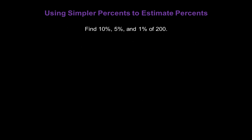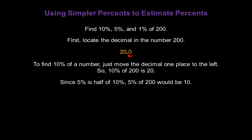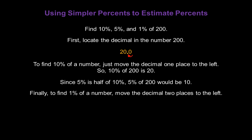Let's find 10%, 5%, and 1% of the number 200. First, locate the decimal in 200 — it's at the end when you don't see one. To find 10%, move the decimal one place to the left, giving us 20. So 10% of 200 is 20. Since 5% is half of 10%, 5% of 200 would be 10. Now for 1%, move the decimal two places to the left — once and twice — so 1% of 200 is 2.